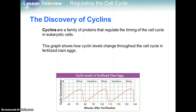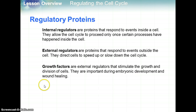There are things called cyclins — a family of proteins that regulate the timing of the cell cycle in eukaryotic cells. This graph shows how cyclin levels change throughout the cell cycle in a fertilized clam egg. We see an increase during mitosis and then a slowdown during interphase and the G portions of the cell cycle. Cyclin levels increase rapidly during mitosis when actual cell division is occurring. Internal regulators are proteins that respond to events inside the cell and allow the cell cycle to proceed only once certain processes have happened inside the cell.